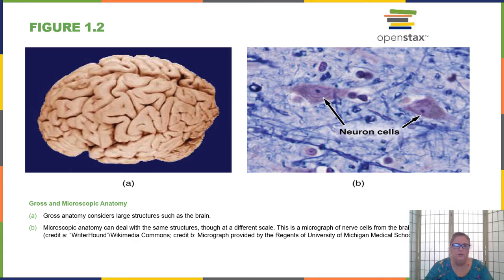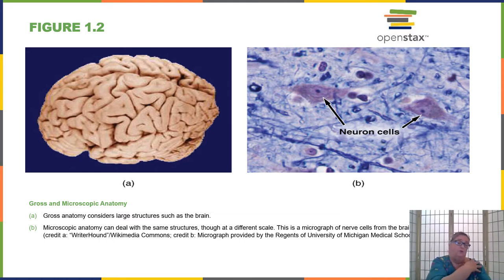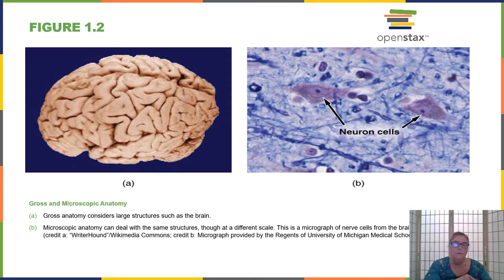Gross anatomy refers to things we can see easily — like the brain. Microscopic anatomy requires a light micrograph. We can also talk about regional anatomy. Some older textbooks, instead of going by body systems, go by region. A regional lab manual would show the shoulder joint and include the bones, muscles, nerves, and blood vessels all in that area. We're going by system, so we'll look at blood vessels, muscles, bones, and nerves separately — though the regional approach can be useful sometimes.